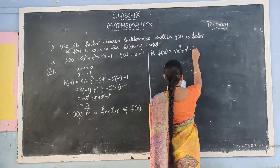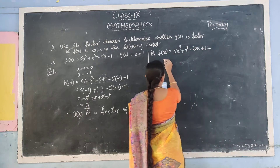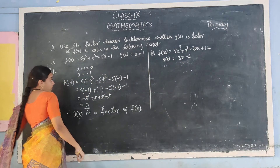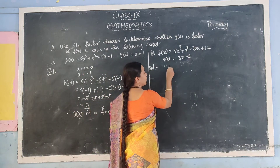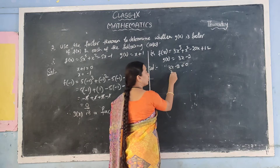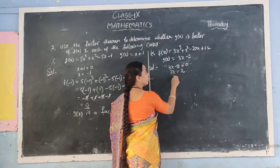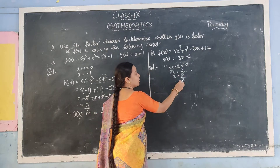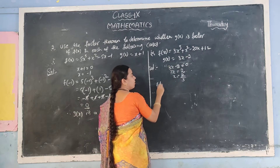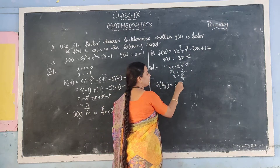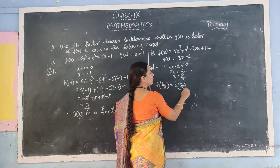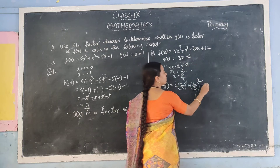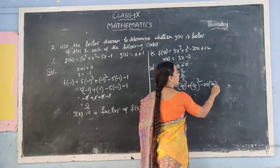p(x) is x squared minus 20x plus 1. g(x) is equal to 3x minus 2. First of all, 3x minus 2 is equal to 0; minus 2 moves to right side, plus 2; 3 moves to right side by division. So x equals 2 by 3. This 2 by 3 is substituted in the place of x. f(2/3) is equal to 3 into (2/3) cubed plus (2/3) squared minus 20 into (2/3) plus 12.